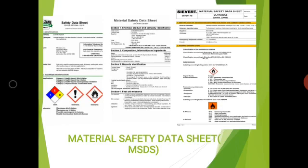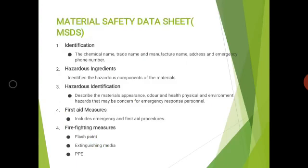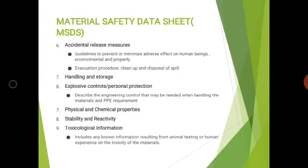The contents of a material safety data sheet include: identification — chemical name, trade name, manufacturer name, address, and emergency phone number. Then hazardous ingredients used, and how to identify the hazardous material by appearance and odor. First aid measures describe what to do in case of leakage or exposure. Firefighting measures describe how to protect yourself in case of an outbreak. Accidental release measures provide guidelines to prevent or minimize adverse effects on human beings, the environment, and property.